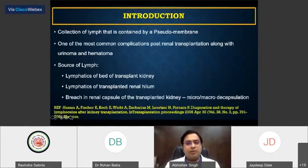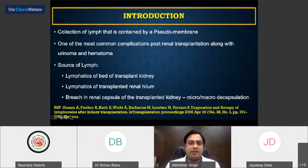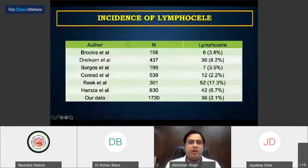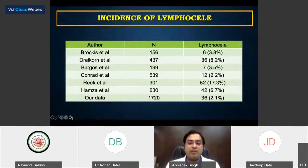What is basically a lymphocele? A lymphocele is a collection of lymph contained within a pseudomembrane. It is one of the most common complications in renal transplantation along with urinoma and hematoma. It may originate from the recipient's transplant bed or from the renal hilum of the donor kidney, or from a micro or macro decapsulation. The incidence is typically between 0.8 to 18%; our data shows around 2.1% of patients have clinically significant lymphoceles.